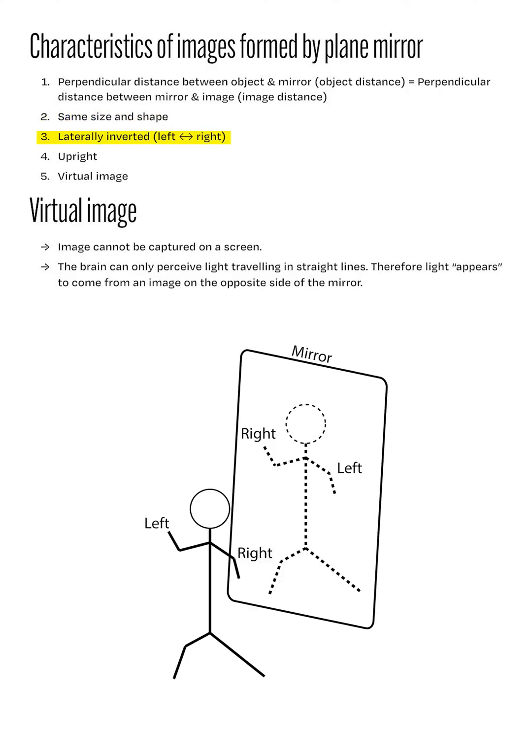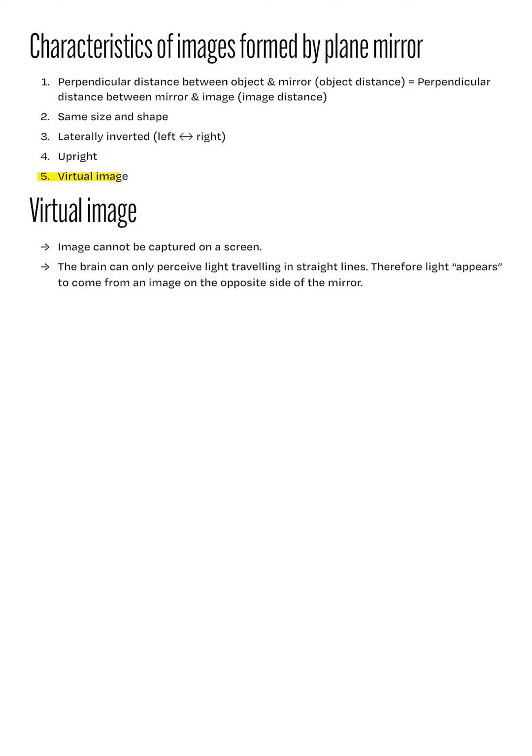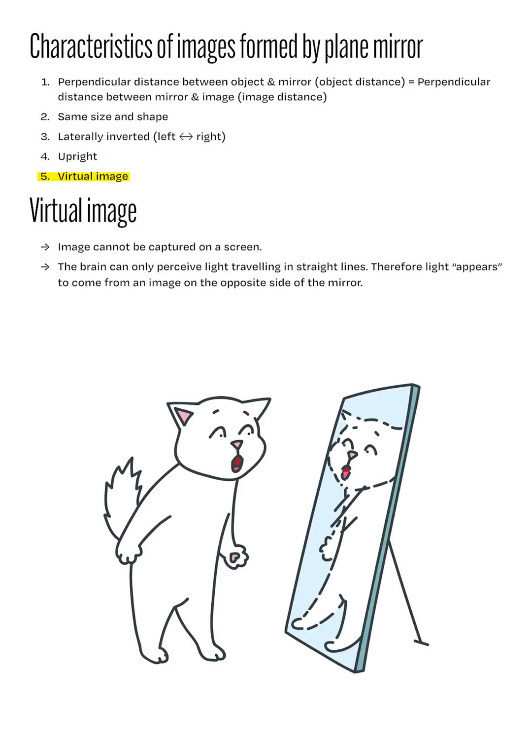Number three, the images produced are laterally inverted, meaning that the left and right side of the object appear to swap positions. Number four, the images produced are all upright. Number five, the images produced by plane mirrors are virtual.